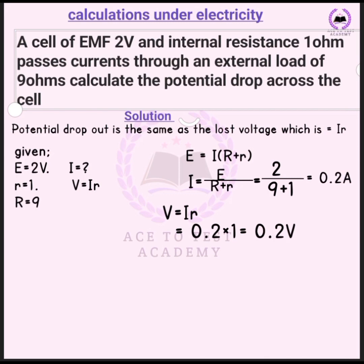We need to find current I first. Using the formula EMF = I(R + r), we calculate I = 2 ÷ (9 + 1) = 0.2 amperes. The potential drop across internal resistance equals I times r, which is 0.2 times 1 = 0.2 volts.